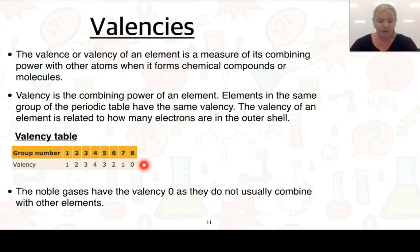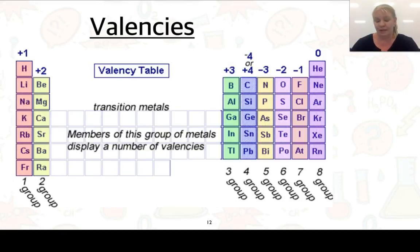I've got a little table here showing you that in group 1 we have a valency of 1, 2 is 2, 3, 4. Now in group 5 we have a valency of 3 because it's easier to gain 3 electrons to make it 8 than it is to lose all 5. Here we've got a valency of 2, again easier to gain 2 electrons than to lose 6, and a valency of 1 because we can gain 1 electron. The noble gases have a valency of 0 as they do not usually combine with any other elements.